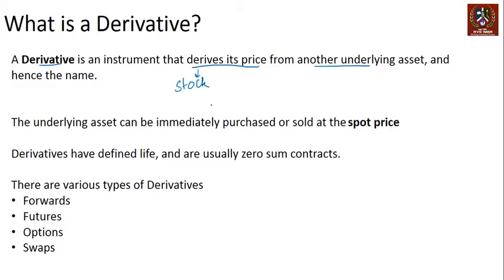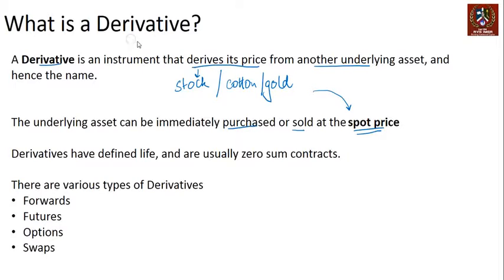The underlying asset can be immediately purchased or sold at the price called the spot price. The underlying asset could be a stock, a commodity like cotton, gold, or anything else, and if you're purchasing it from the market, it is purchased at the spot price. The underlying price is what eventually guides or determines what the price of the derivative is going to be — that's why it is called a derivative, because it derives its pricing from the underlying asset.